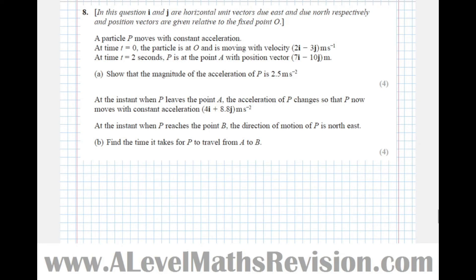Question 8 says i and j are horizontal unit vectors due east and due north respectively, and position vectors are given relative to the fixed point O. A particle P moves with constant acceleration, so that's probably telling us that SUVAT is useful.